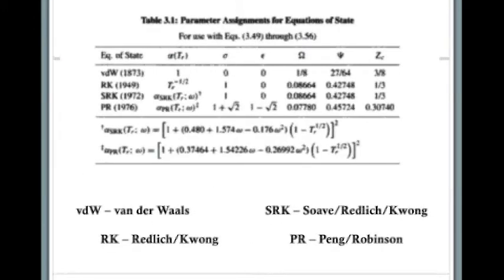Depending on the cubic equation of state, those different variables change. The Van der Waals equation is the simplest cubic equation of state, with sigma and epsilon both equaling zero. And they get progressively more complex as you go down, and also more accurate.